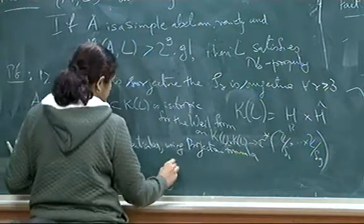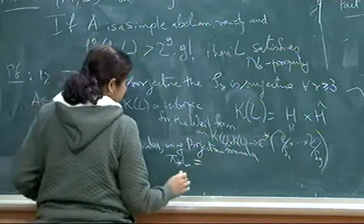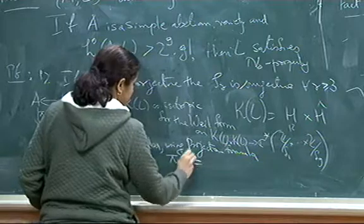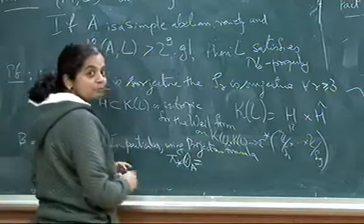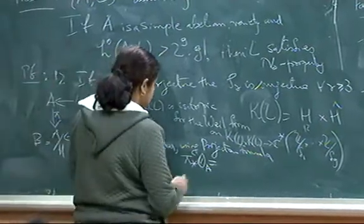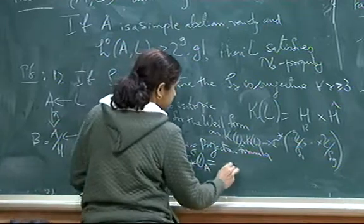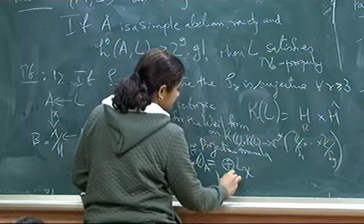One can write pi lower star of L is actually, because firstly for O_A, so we call this B. Actually, actually I am over time, 5 minutes shall I take. Pi lower star O_A is actually a direct sum of degree 0 line bundles, where chi are characters on H.